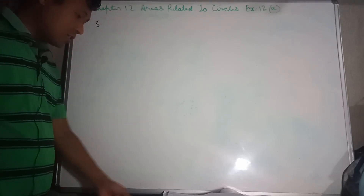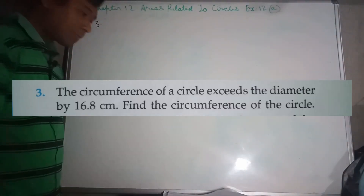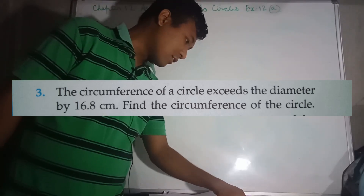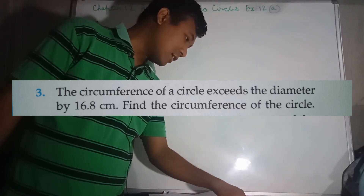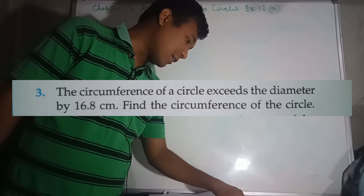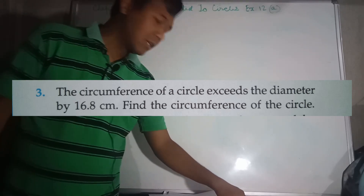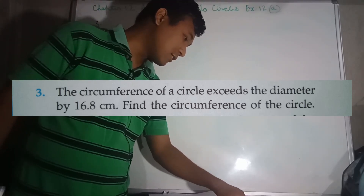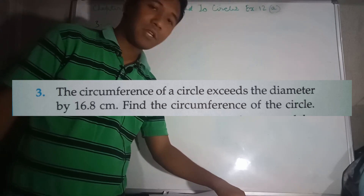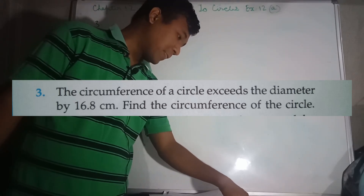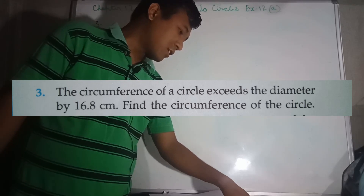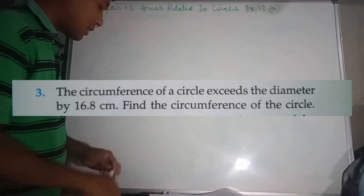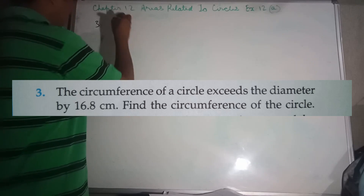Next, Question number 3: The circumference of a circle exceeds the diameter by 16.8 cm. We need to find the circumference of the circle.